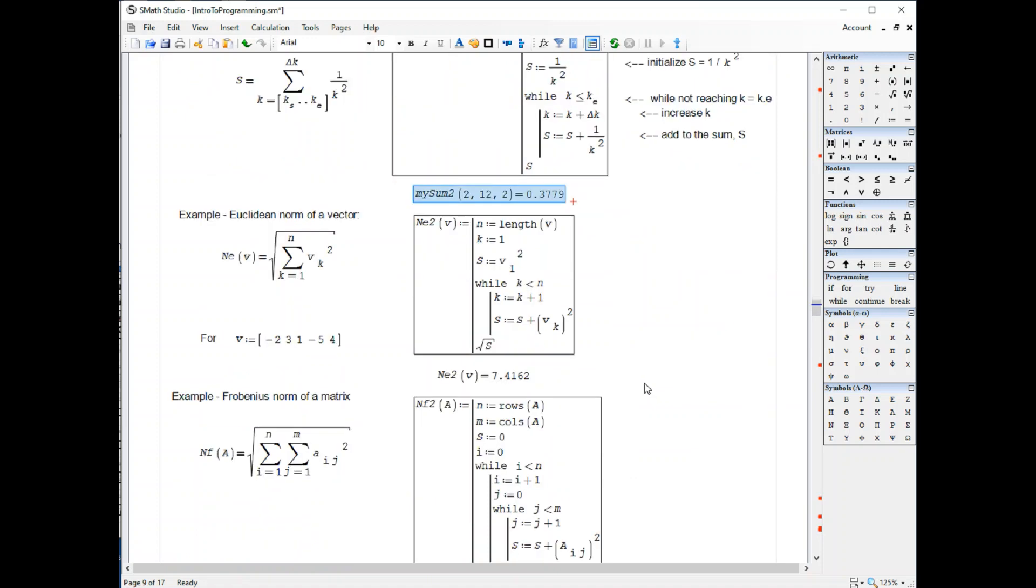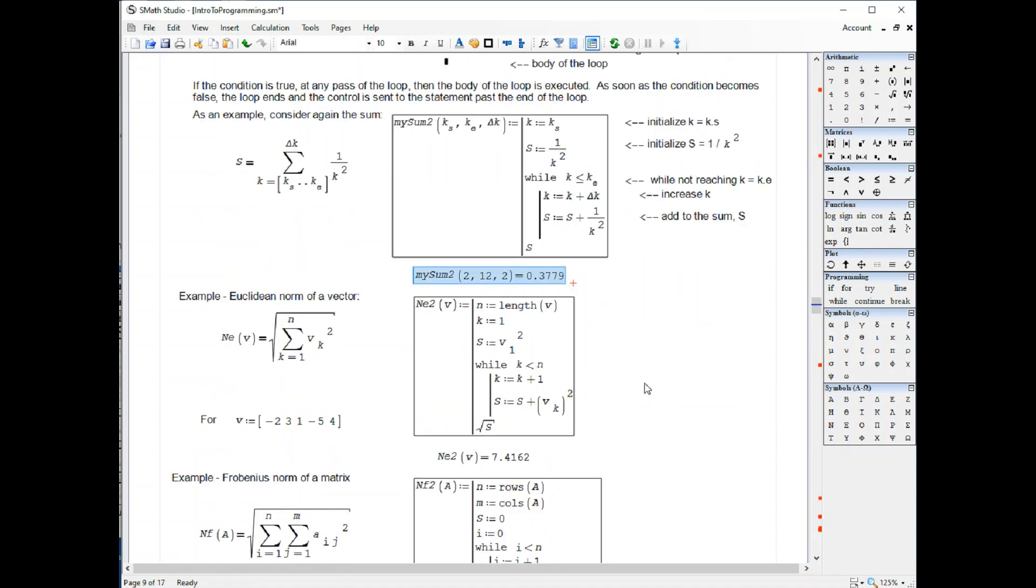And then I use it to calculate the Euclidean norm of a vector, initializing k equals 1, s equals v1 squared for the first value, and then while k less than n, increase the index, increase s until you get your results right here.